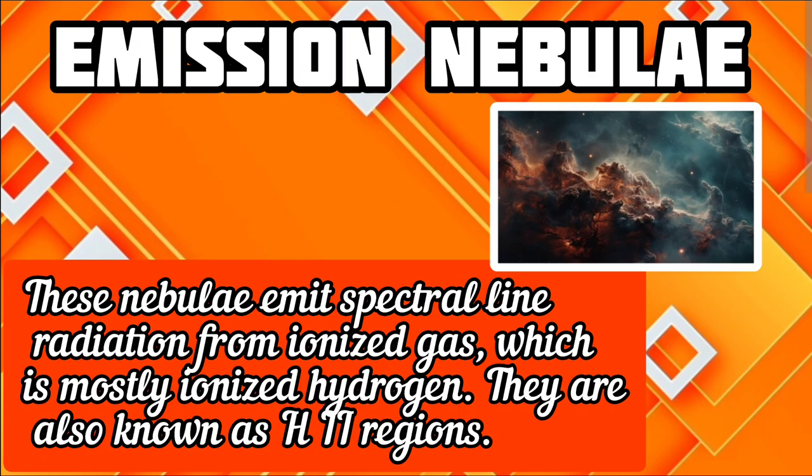Emission nebulae: these nebulae emit spectral line radiation from ionized gas, which is mostly ionized hydrogen. They are also found in two regions.